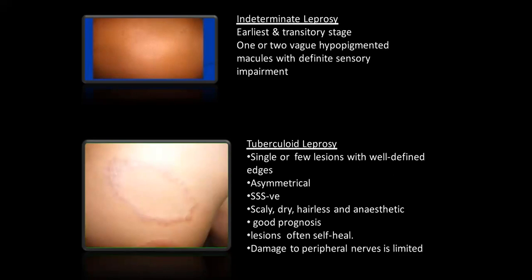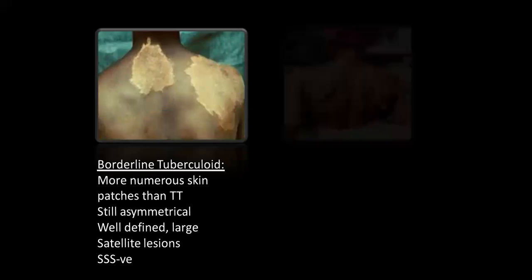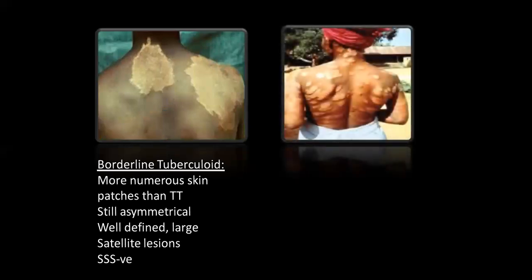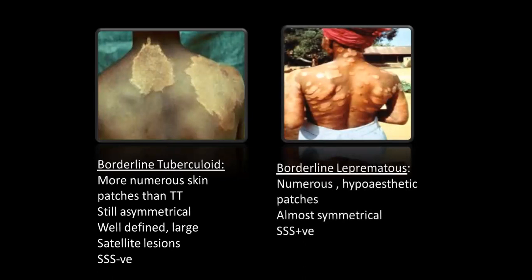Borderline tuberculoid: more numerous lesions, patches larger, may become plaques, still asymmetrical, well-defined, large. Satellite lesions develop. The slit skin smear is still negative. In borderline lepromatous, there is an abundance of numerous hypoaesthetic lesions, almost symmetrical, and now the slit skin smear starts becoming positive.